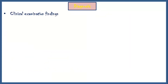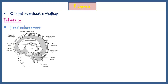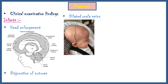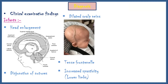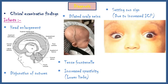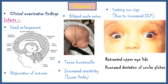Diagnosis of hydrocephalus is mainly based on clinical findings. In infants, these include enlargement of the head, disjunction of sutures, dilation of scalp veins, tense fontanelle, increased spasticity especially in lower limbs, and the setting sun sign, which is characterized by retracted upper eyelids, downward deviation of ocular globes, and visible white sclera above the iris.